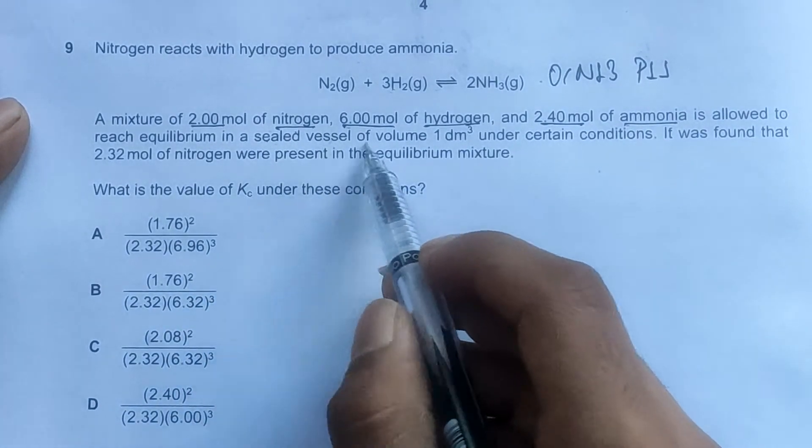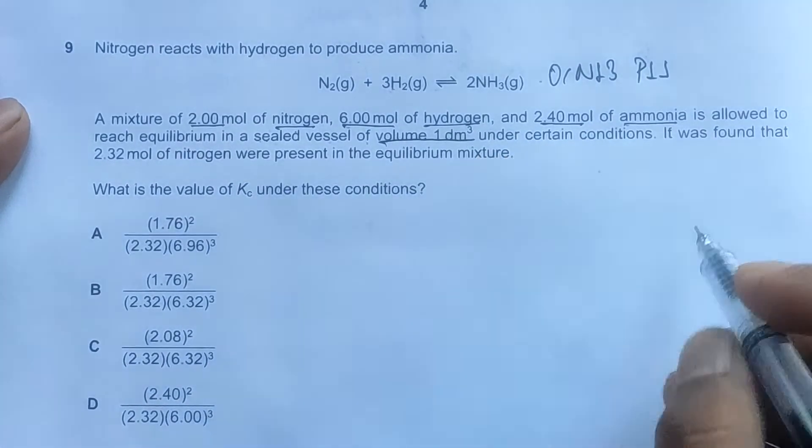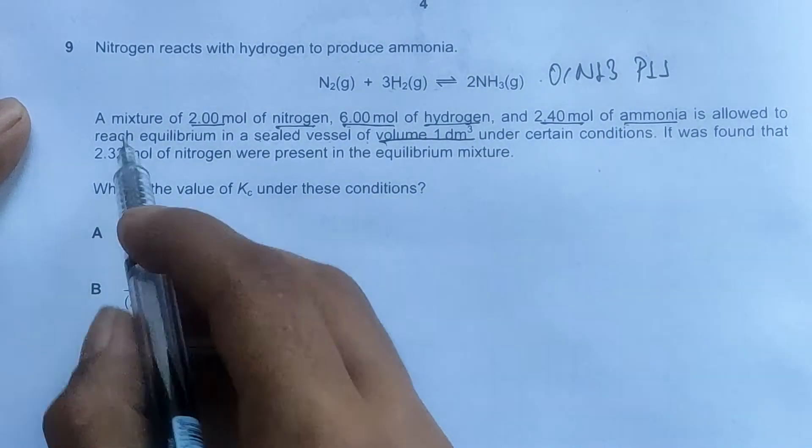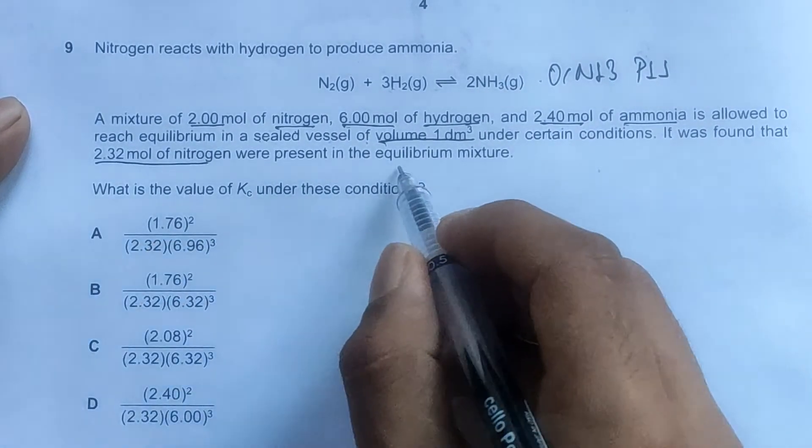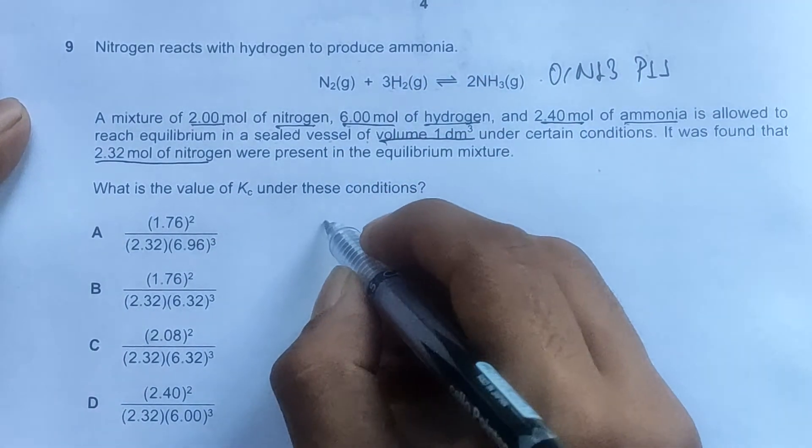6 moles of hydrogen, and 2.4 moles of ammonia is allowed to reach equilibrium in a sealed vessel of volume 1 dm³ under certain conditions.